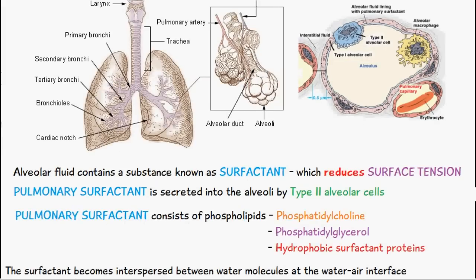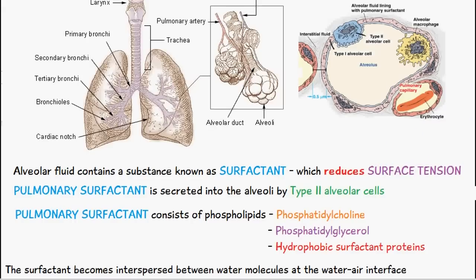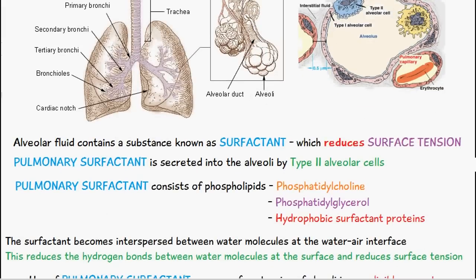The surfactant becomes interspersed between water molecules at the water-air interface. This reduces the hydrogen bonds between the water molecules at the surface and thus reduces surface tension.